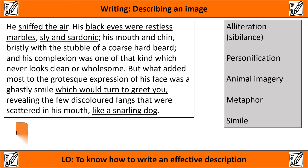In the following paragraph: 'He sniffed the air. His black eyes were restless marbles, sly and sardonic, his mouth and chin bristly with the stubble of a coarse hard beard. And his complexion was one of that kind which never looks clean or wholesome. But what added most to the grotesque expression of his face was a ghastly smile which would turn to greet you, revealing the few discoloured fangs that were scattered in his mouth like a snarling dog.' Link up the device to the correct example.